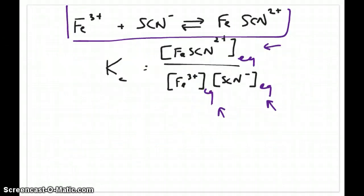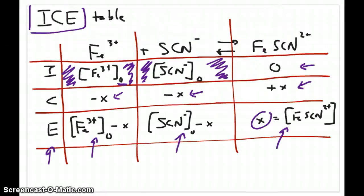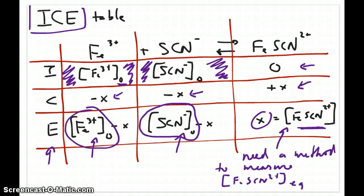The key here is that in order for us to be able to calculate KC, we already know this quantity because we started with something that we know. We also know this quantity. What we don't know is X. So we need to, in the next video, discuss a method to help us figure out what the concentration of FeSCN is at equilibrium, and that's what I wrote down here, and that's what I will discuss in the next video.